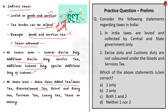At the state level, GST subsumes state value added tax or sales tax, entertainment tax, octroi and entry tax, purchase tax, luxury tax, and taxes on lottery, betting, and gambling. If a question is asked in mains to list out the differences between direct and indirect taxes, you can write all these points: on whom the tax is levied, the shifting of burden, examples of direct and indirect taxes, and who levies and collects the tax.